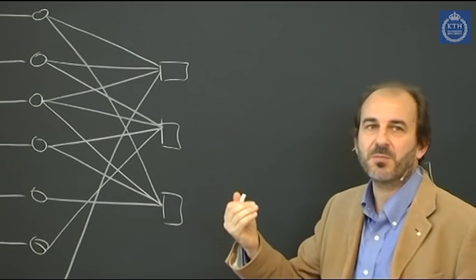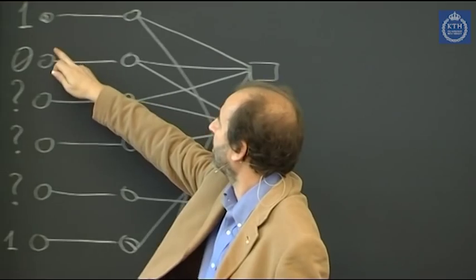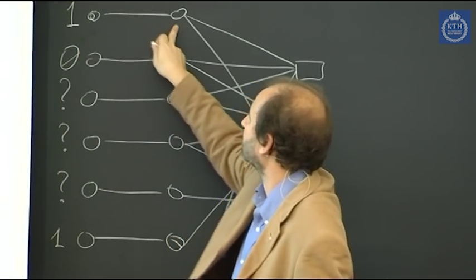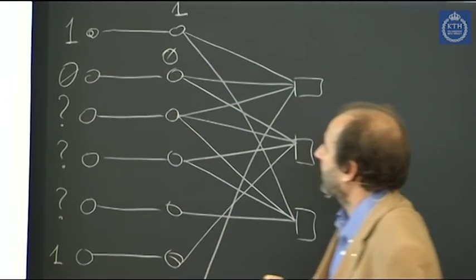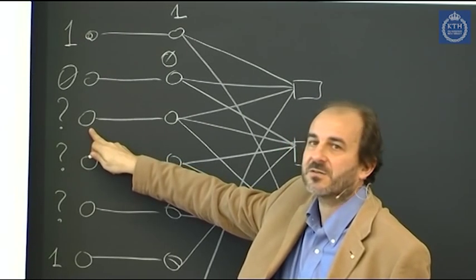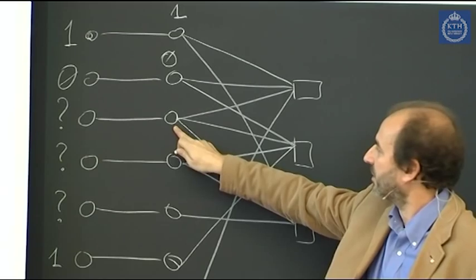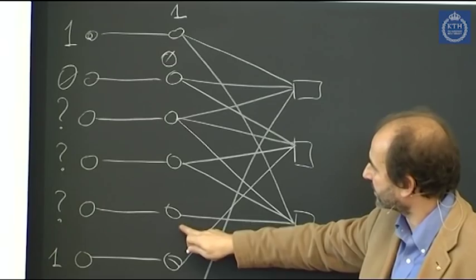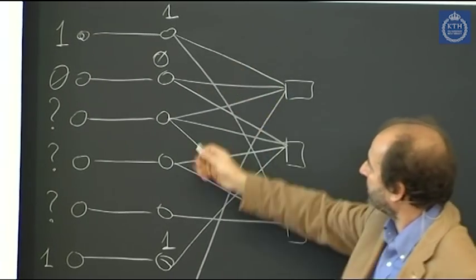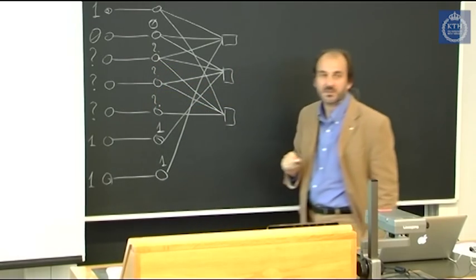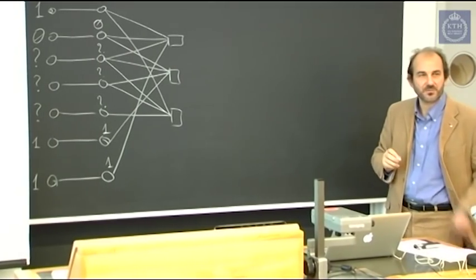For example, from the channel we receive a one for the first bit, a zero for the second bit, a question mark for the third bit — we don't know if it's zero or one — and question marks for the next two bits as well. Then we receive a one, and another one. So we have three question marks and four correct bits received from the channel. We now have to find the values of the question marks.